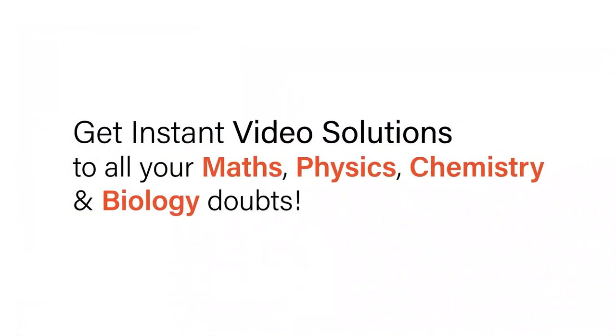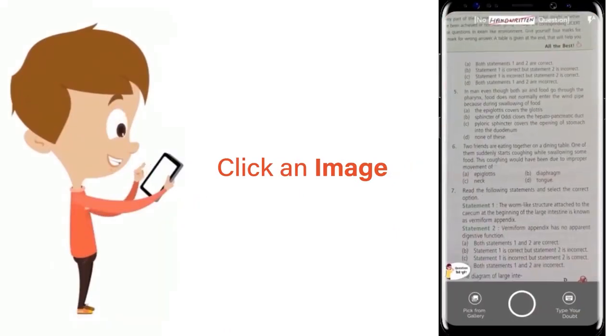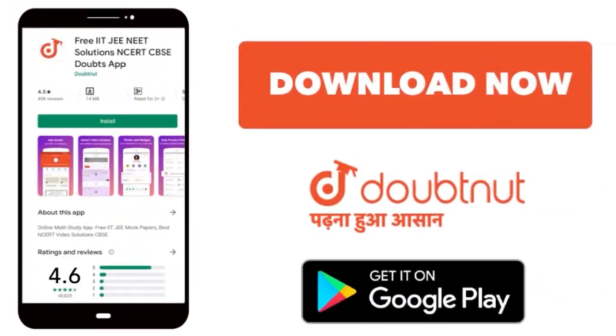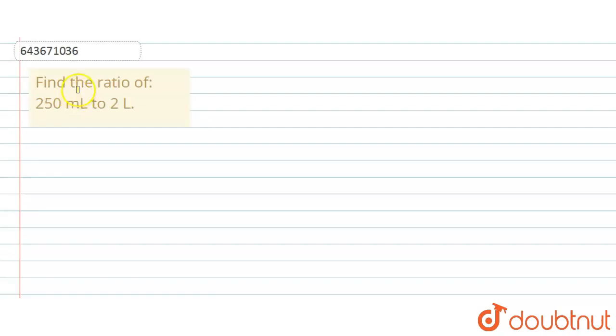With Doubtnet, get instant video solutions to all your math, physics, chemistry, and biology doubts. Just click the image of the question, crop the question, and get an instant video solution. Download Doubtnet app today. Hello everyone, the question says find the ratio of 250 milliliters to 2 liters.